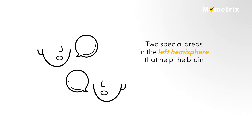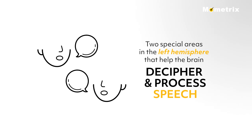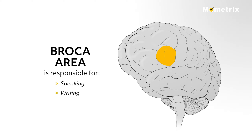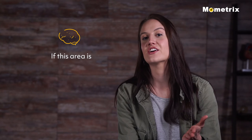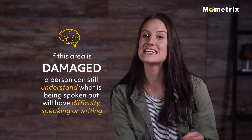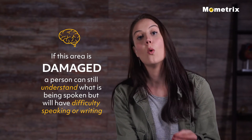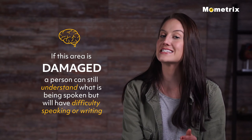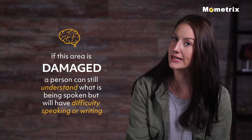There are two special areas in the left hemisphere that help the brain decipher and process speech. The Broca's area of the brain is responsible for speaking and writing. Consequently, if this area is damaged, a person can still understand what is being spoken but will have difficulty speaking or writing.